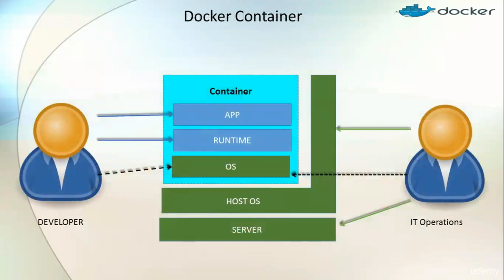Let's talk about Docker containers. If you look at the diagram, one side we have the developer, the other side we have IT operations. There is a set of components shared between them — that is the container OS. The container OS comes from the host OS and is not a complete OS; it only requires the files and binaries needed to run the application. The rest of the libraries and components reside with the host operating system, making containers very lightweight. Containers take very few seconds to spawn, turn on, turn off, or migrate.